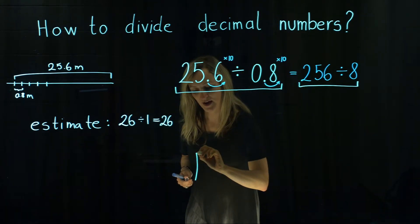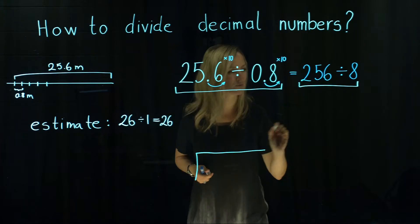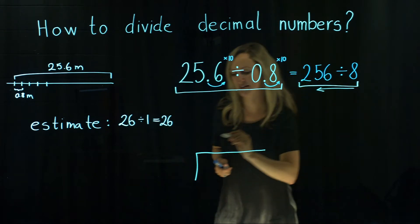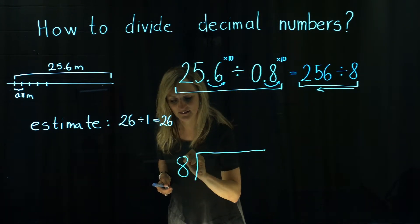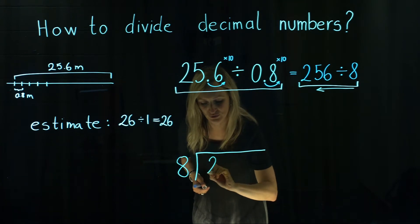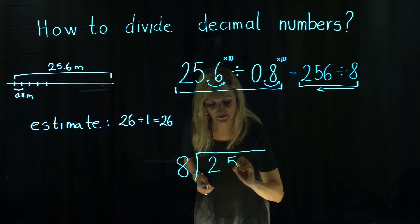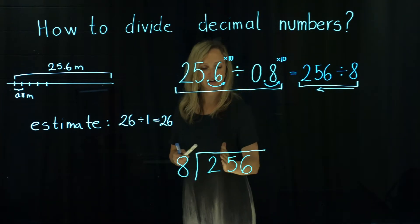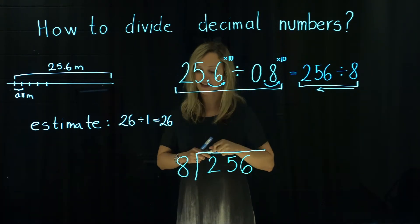We write a division stage. We know from our previous videos that firstly we write then 8 out of the stage. Under the stage we write 256. And then we go digit by digit by digit, step by step.